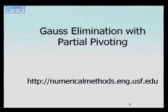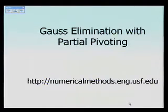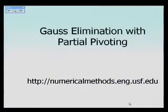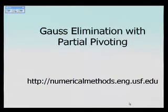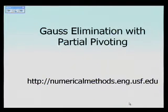I'm going to show you how to do Gaussian elimination with partial pivoting, and we're going to talk about the theory behind it. I strongly suggest that if you have not looked at the naive Gaussian method theory and example, you do that first. We'll be skipping steps here because Gaussian elimination with partial pivoting is very similar to the naive Gaussian method, except for one step.